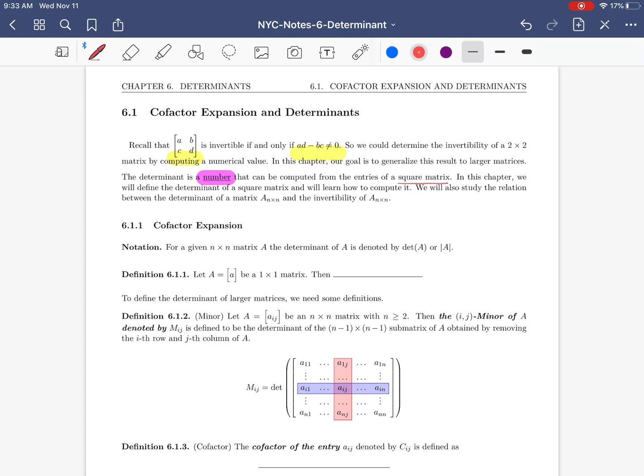In this chapter, one of our goals is to generalize this result to larger matrices. The determinant of a matrix is indeed a number, which is computed from entries of a given square matrix. We define determinant only for square matrices. For a given n by n matrix A, the determinant of A is denoted by either DET bracket A or you use two vertical bars to show the determinant.